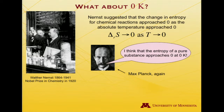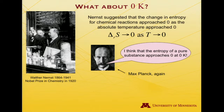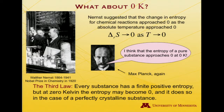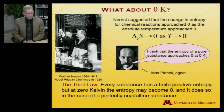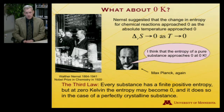Max Planck had a further refinement on that suggestion. He said that the entropy of a pure substance approaches 0 at 0 Kelvin. So a statement of the third law of thermodynamics is: every substance has a finite positive entropy, but at 0 Kelvin the entropy may become 0, and it does so in the case of a perfectly crystalline substance. In some sense, that is the definition of a perfectly crystalline substance — it is one where the entropy goes to 0 as the temperature goes to 0.